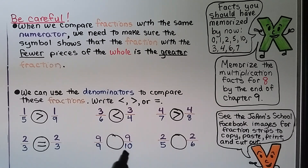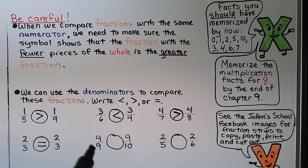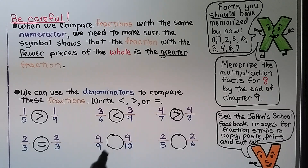Nine-tenths means it was split into ten parts and we only have nine of them — that's not a whole. Nine-ninths has the lower number for the denominator. Nine-ninths is greater than nine-tenths.